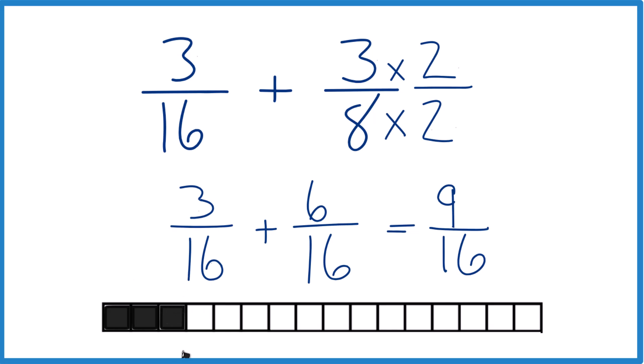But since these are all 1/16, that's our denominator, we can just add our 6: 1, 2, 3, 4, 5, 6/16, and we end up with 9/16.